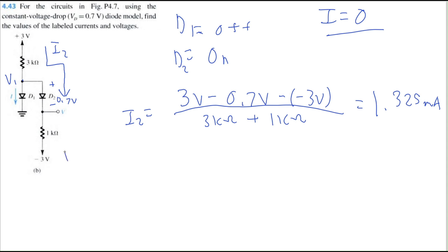So now if we travel up from the circuit, we can calculate V to be negative 3 volts plus the voltage drop across this 1 kilo ohm resistor. So that would be current times resistance, so 1.325 milliamps times 1 kilo ohm. So I calculate V to be negative 1.675 volts.